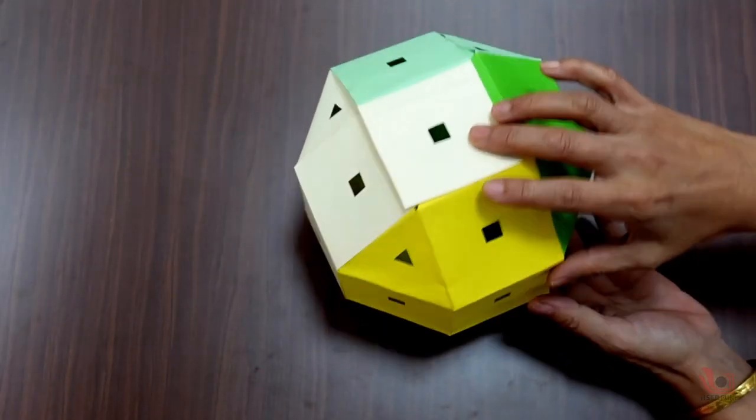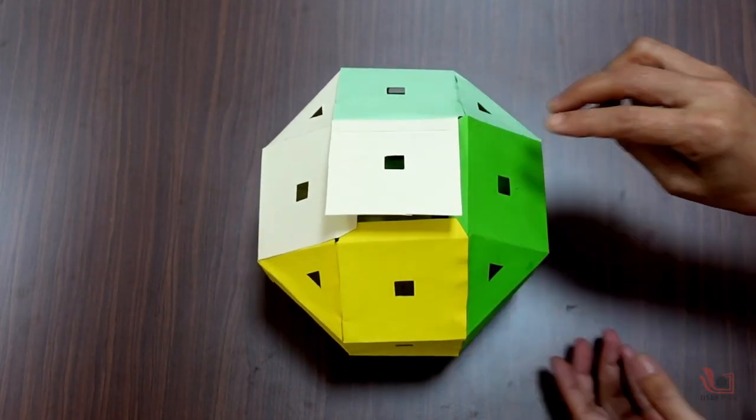Thus, when all the flaps are joined to the side flaps, we see Rhombicuboctahedron form.